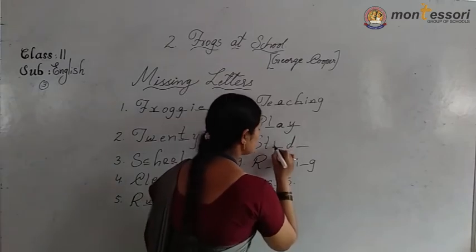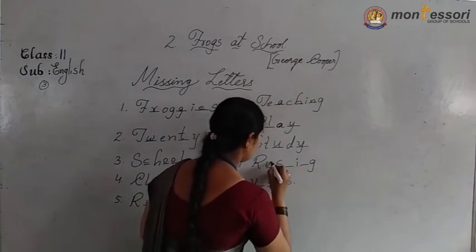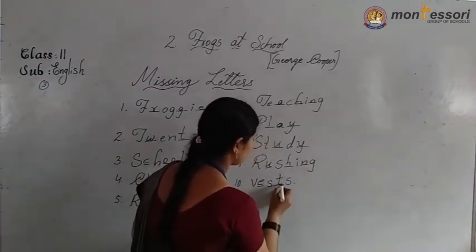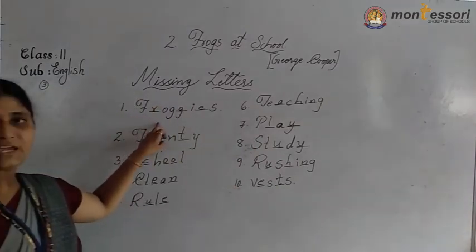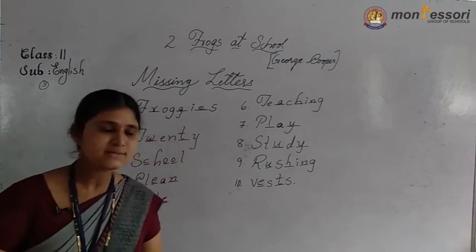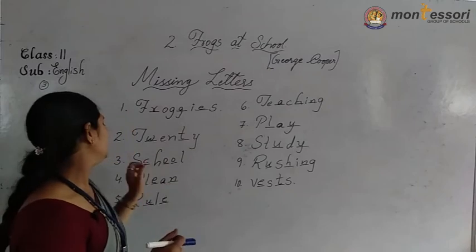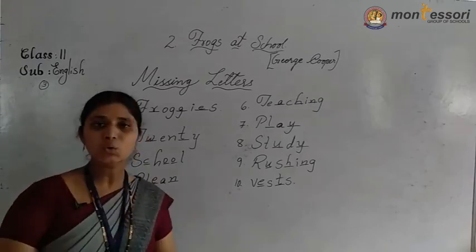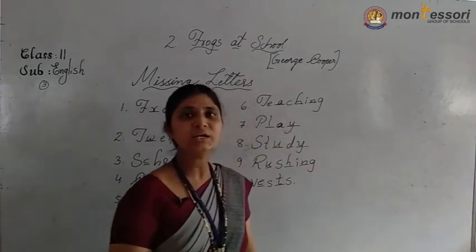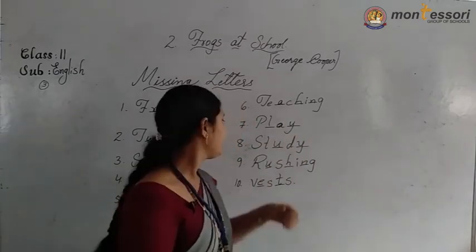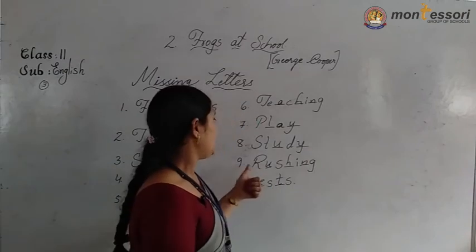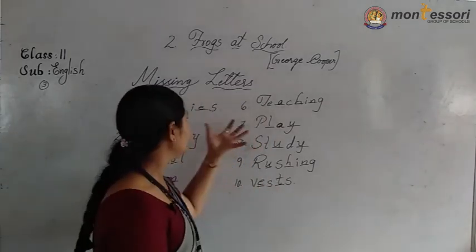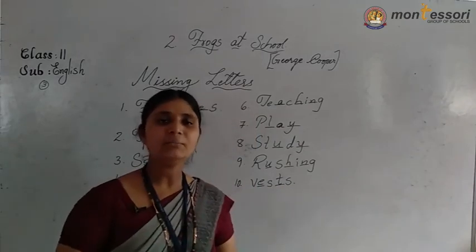Next: study. Next: rushing. Next: V-E-S-T-S, vests. Now see — froggies F-R-O-G-G-I-E-S, twenty T-W-E-N-T-Y, school S-C-H-O-O-L, clean C-L-E-A-N, rule R-U-L-E, teaching T-E-A-C-H-I-N-G, play P-L-A-Y, study S-T-U-D-Y, rushing R-U-S-H-I-N-G, vests V-E-S-T-S. All these are the missing letters taken from the hard words.